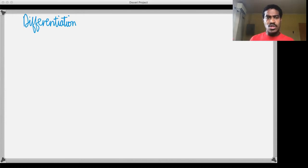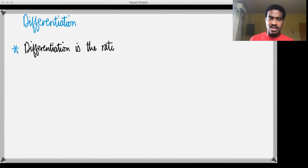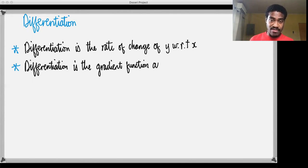Previously, what we should know is that differentiation is the rate of change of y with respect to x. So that is the first thing you should know where differentiation is concerned. It is also the gradient function at a point x. That's the next thing to note about differentiation. It is a gradient function at a point x.